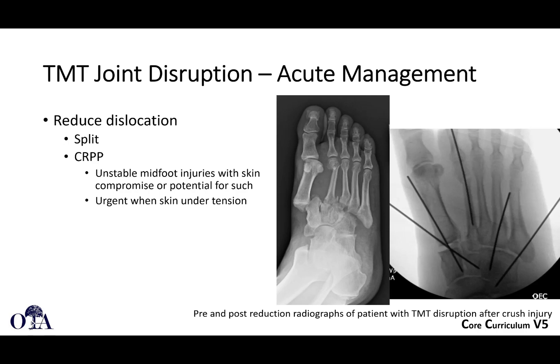Acutely, reduce the dislocation. A lot of times you can get a provisional closed reduction if you have severe soft tissue compromise or a lot of swelling. You can assess whether opening the injury would allow soft tissue closure without excessive tension. If you have very unstable dislocations—you reduce it but it pops out again and the skin is under tension—you're probably not going to want to wait until the skin is okay to open everything. If you can get a closed reduction, that's an indication to close reduce and pin it, and then come back for definitive treatment later.